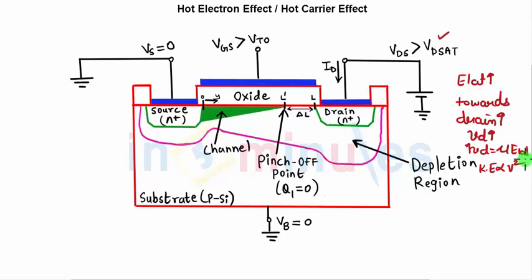This huge kinetic energy makes the electrons quite hot — these are the hot electrons. These hot electrons move toward the drain with very high energy because the electric field toward the drain is high, and they undergo a phenomenon at the drain junction or interface called impact ionization.